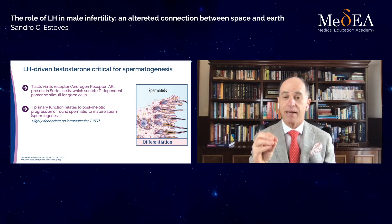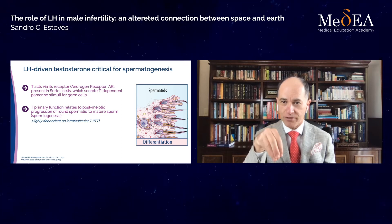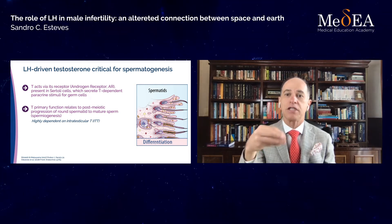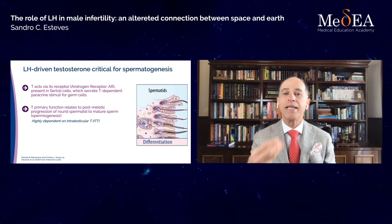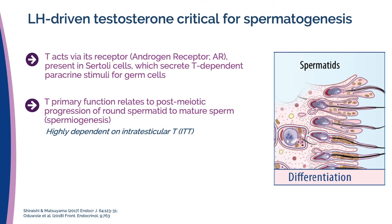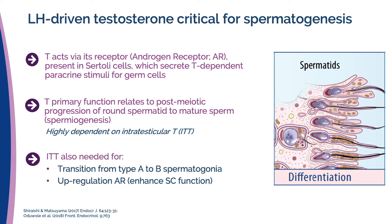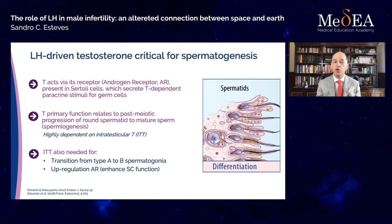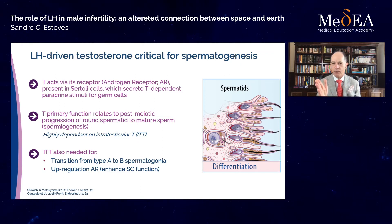Intratesticular testosterone is about 100 times higher than what we measure in the blood. This testosterone is LH-driven, and is needed for the transition from type A to type B spermatogonia, for up-regulation of the androgen receptor to improve Sertoli cell function. But as I said, the primary action is at the end part of spermatogenesis — spermiogenesis — the progression from round spermatids to mature sperm.